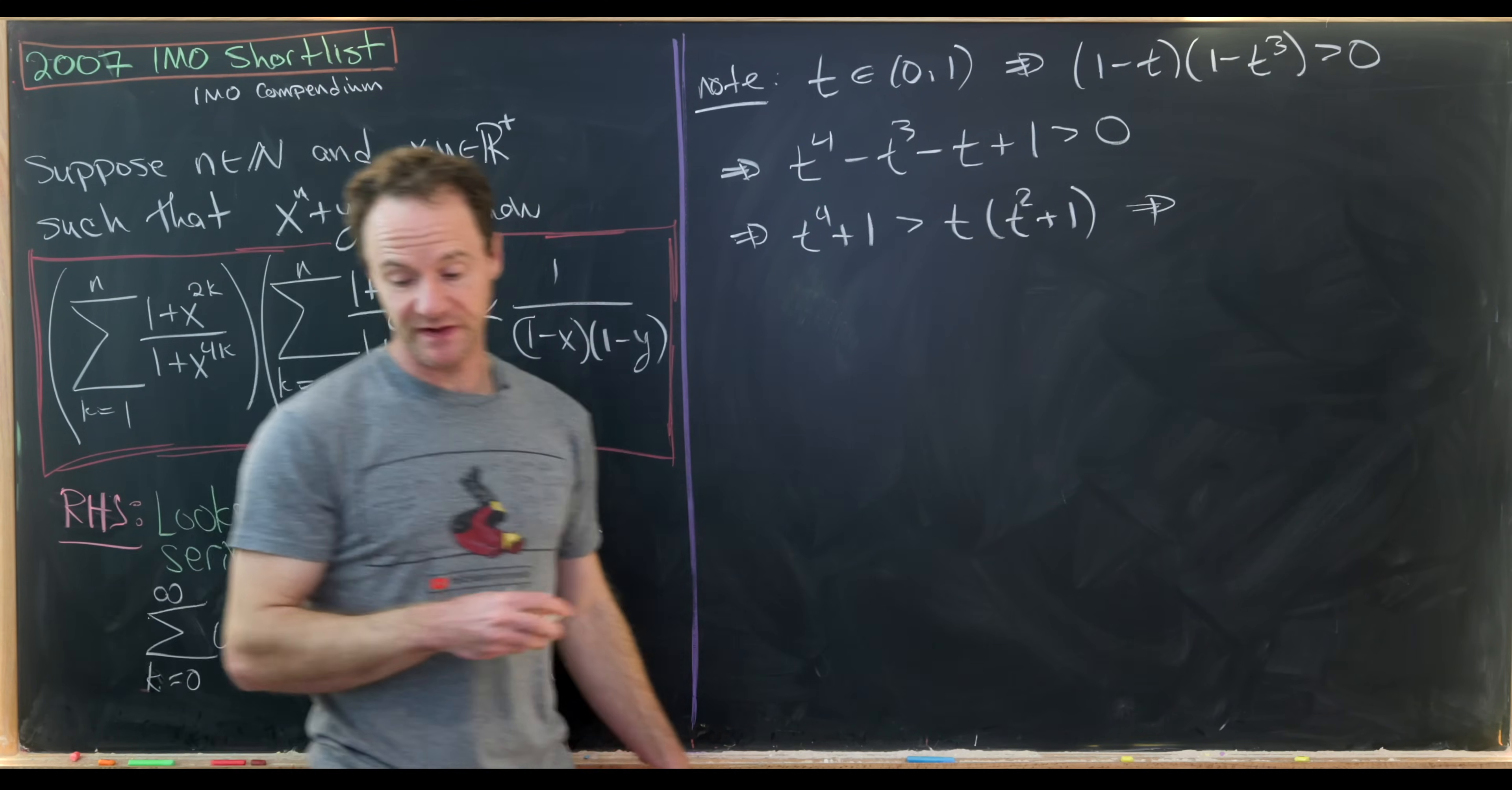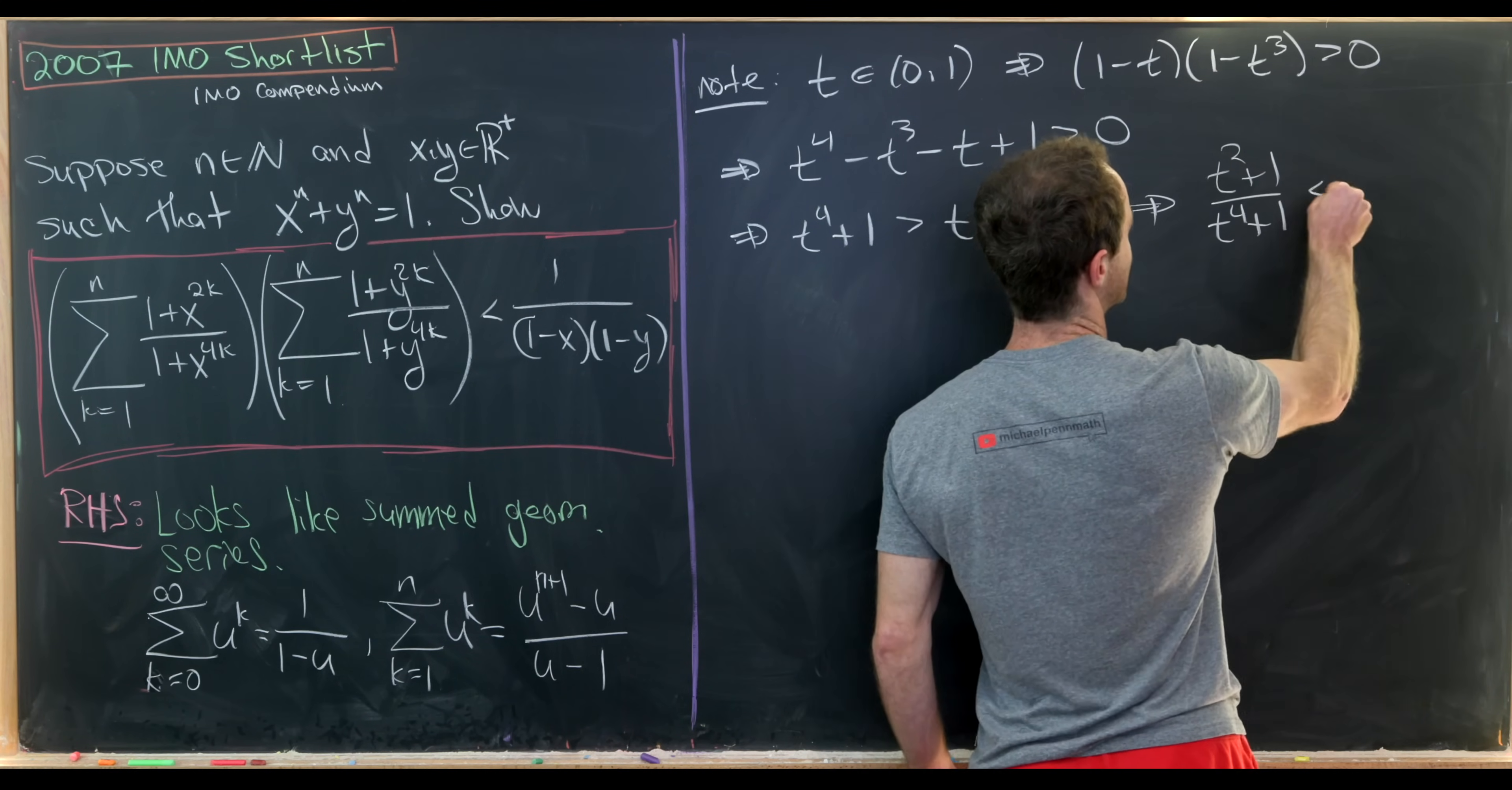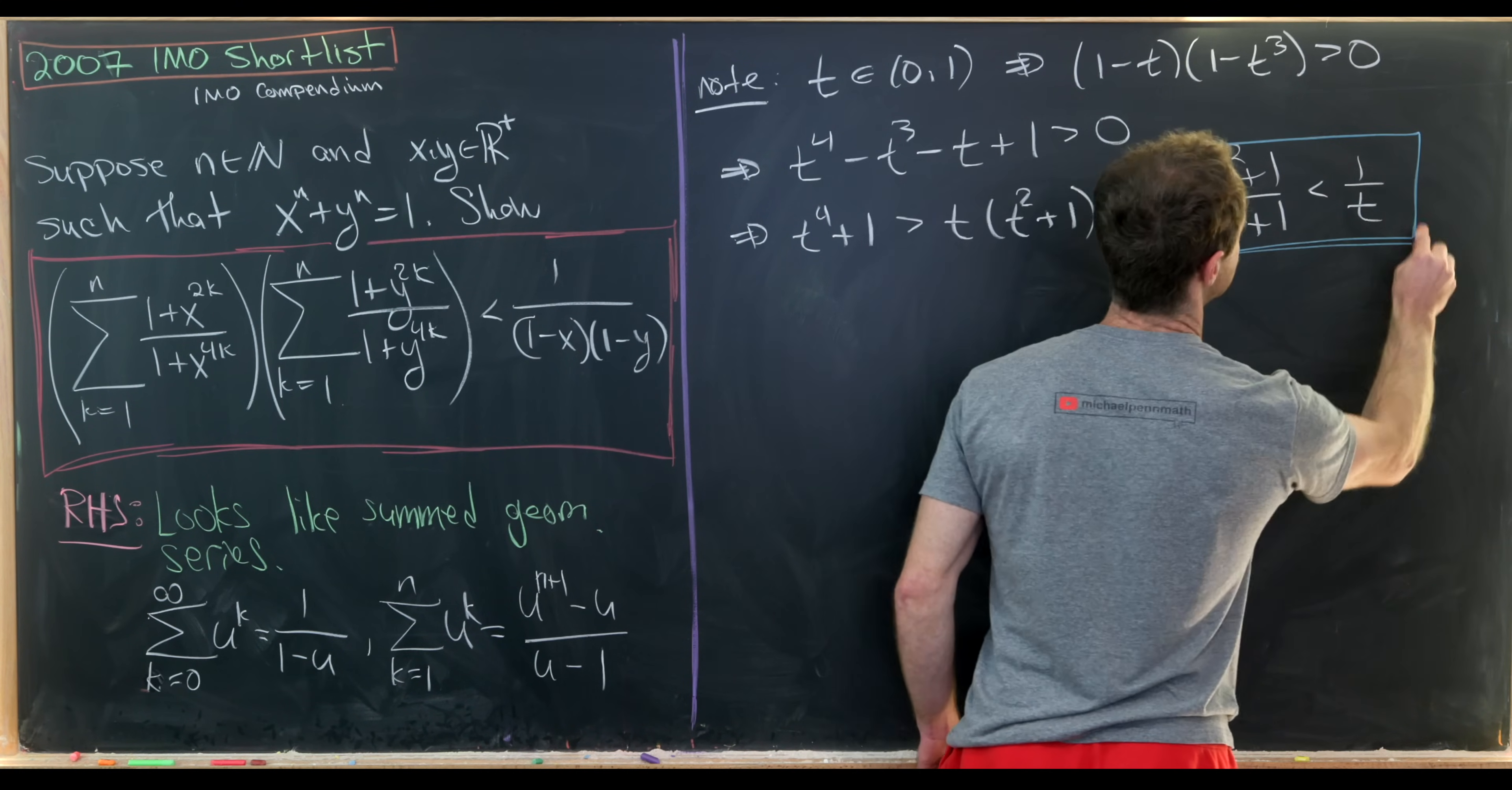we'll end up with t squared plus 1 over t to the 4th plus 1 is less than 1 over t. So let's put a box around that because that's going to be pretty useful.